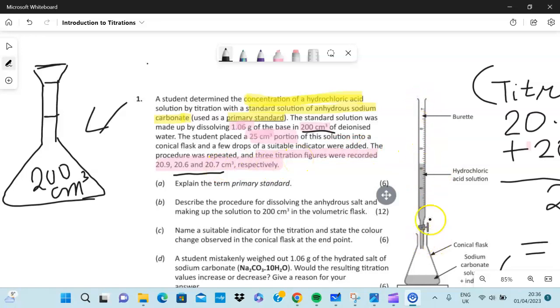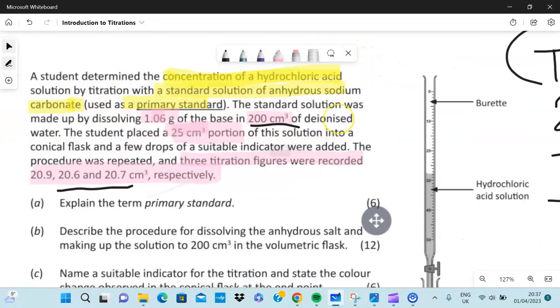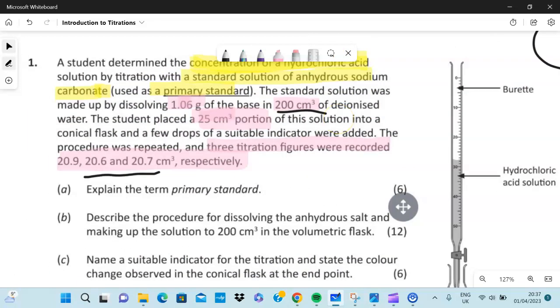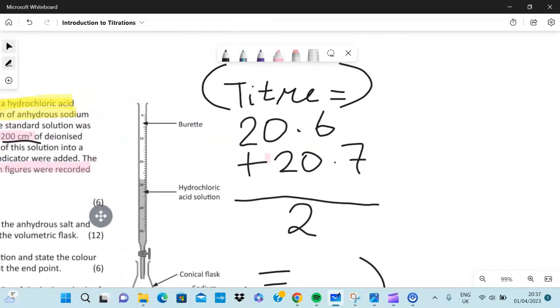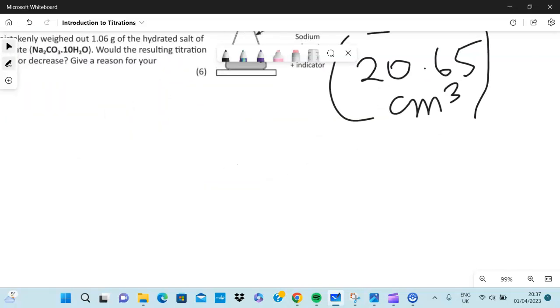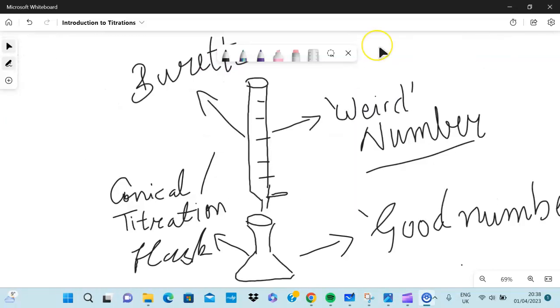The weird number comes from the average titer. So that's the amount of solution that was required from the burette to complete the entire reaction. How do you do this? There is a bit of a trick in this question. It is showing three titration figures. You repeat the experiment, but these three ones you always ignore the first one because those ones are rough titrations. Forget about that one, then we take those two, add them together, divide by two, and then you get the mean titer figure.